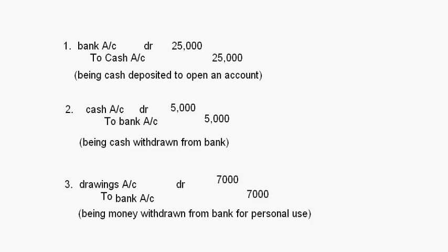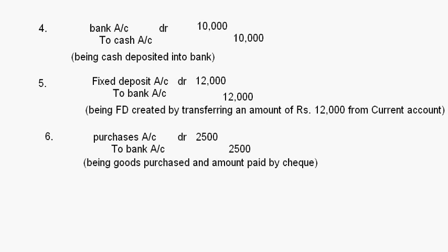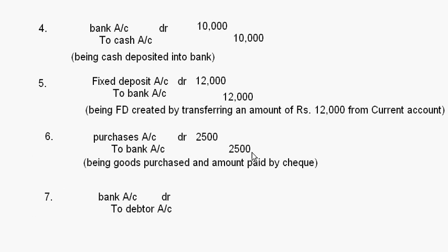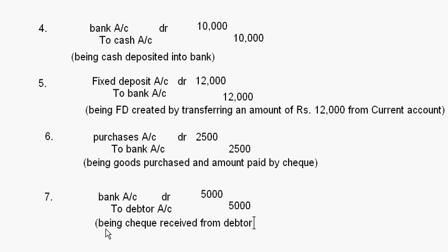The next transaction: received a check of rupees 5,000 from a debtor. You are receiving money but in the form of a check, so bank account debit to the debtor account — credit the giver. The amount was 5,000 rupees, so bank account debit 5,000 to debtor account 5,000, being check received from debtor.